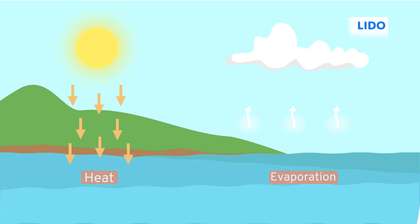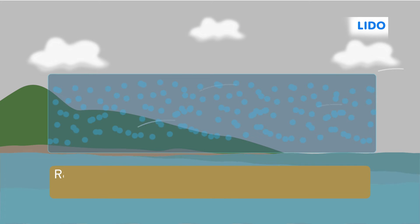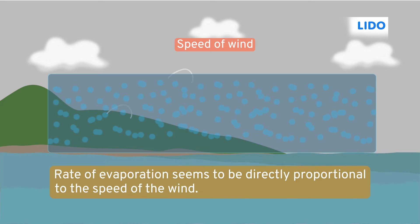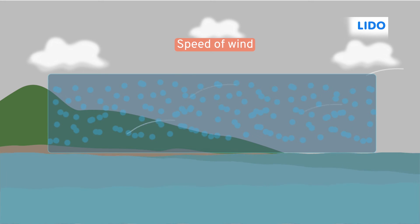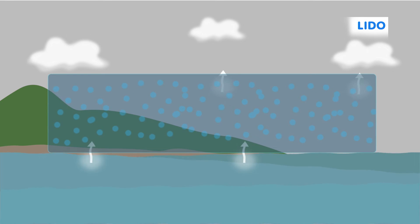Speaking about factors, next time you sweat, you will observe that it dries faster when the fan is switched to its highest speed. The rate of evaporation seems to be directly proportional to the speed of the wind, which means that the evaporation rate increases with an increase in wind speed. But do you know why this happens? This happens because when the wind blows past us, the particles of water move away with the wind, decreasing the water vapor in the surroundings and as a result, evaporation increases to compensate for the water vapor content in the air.